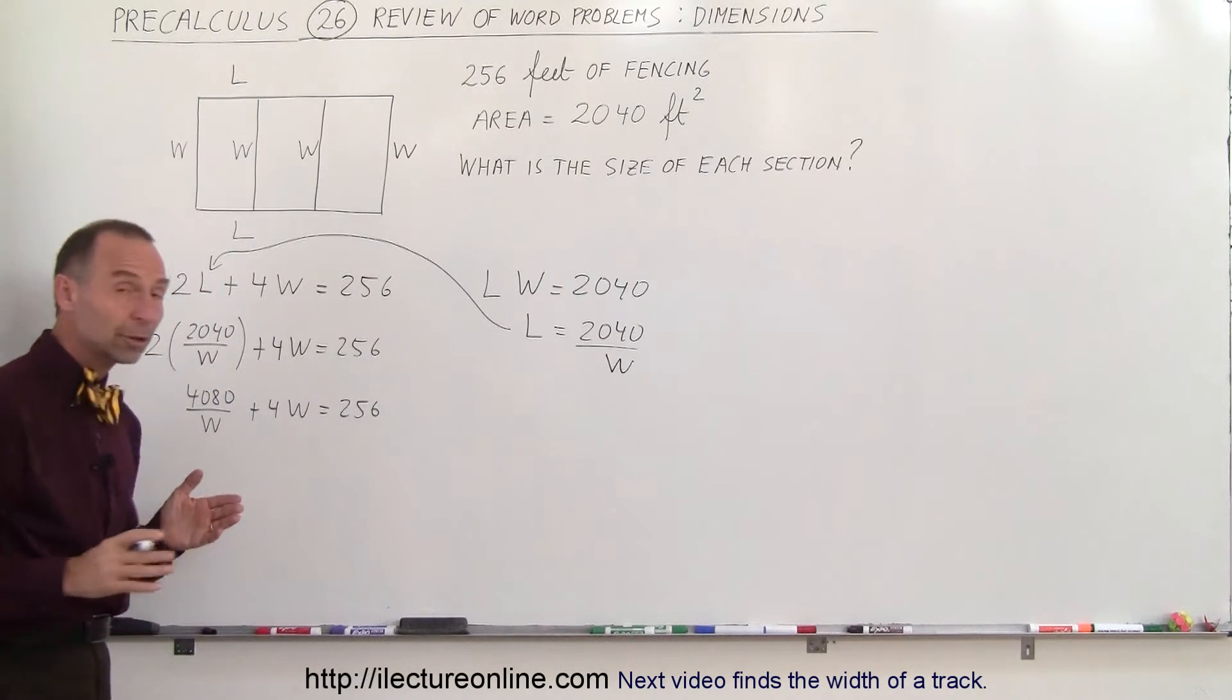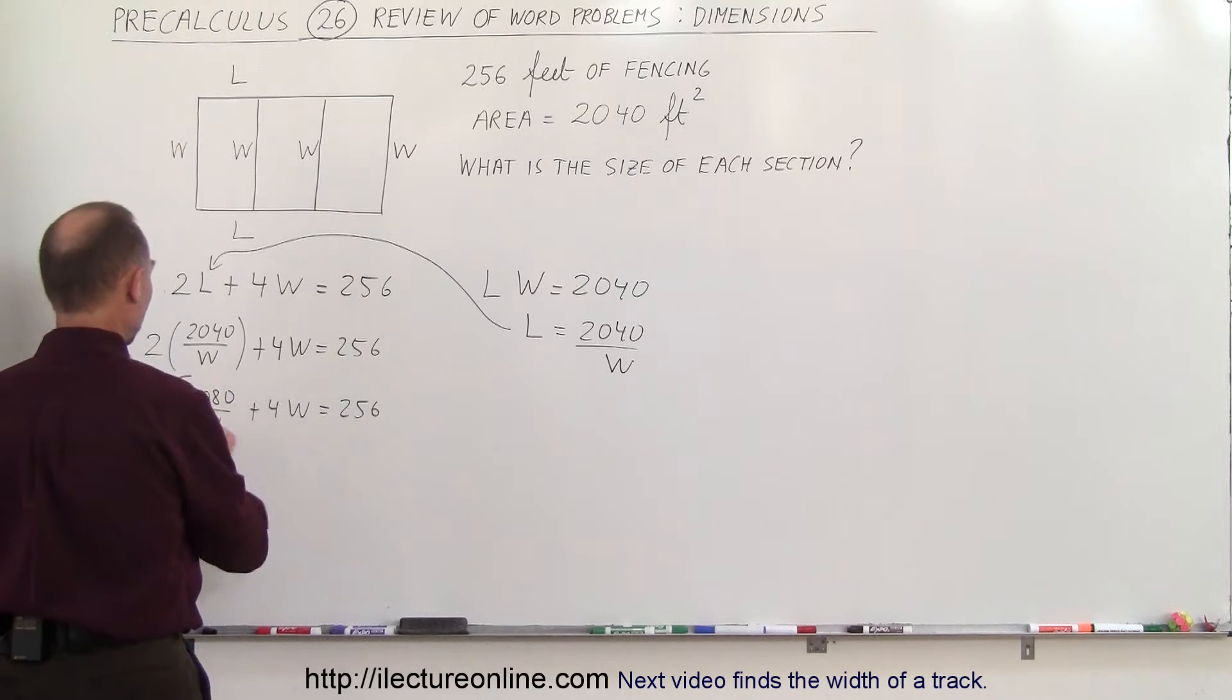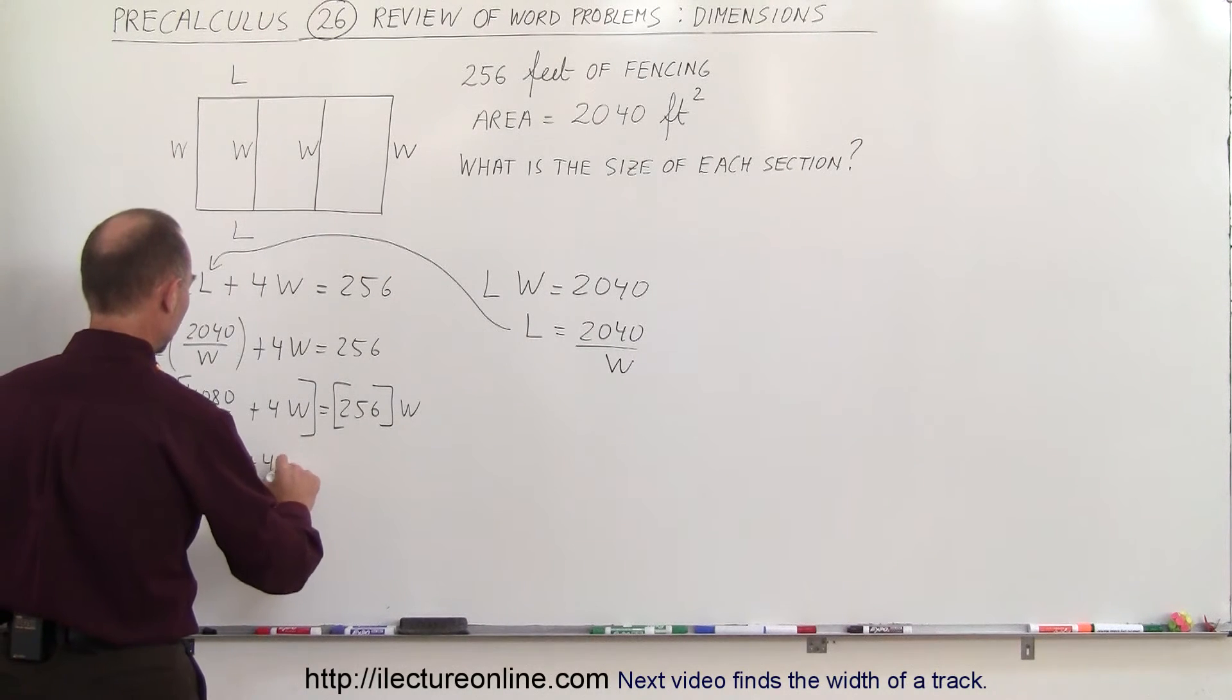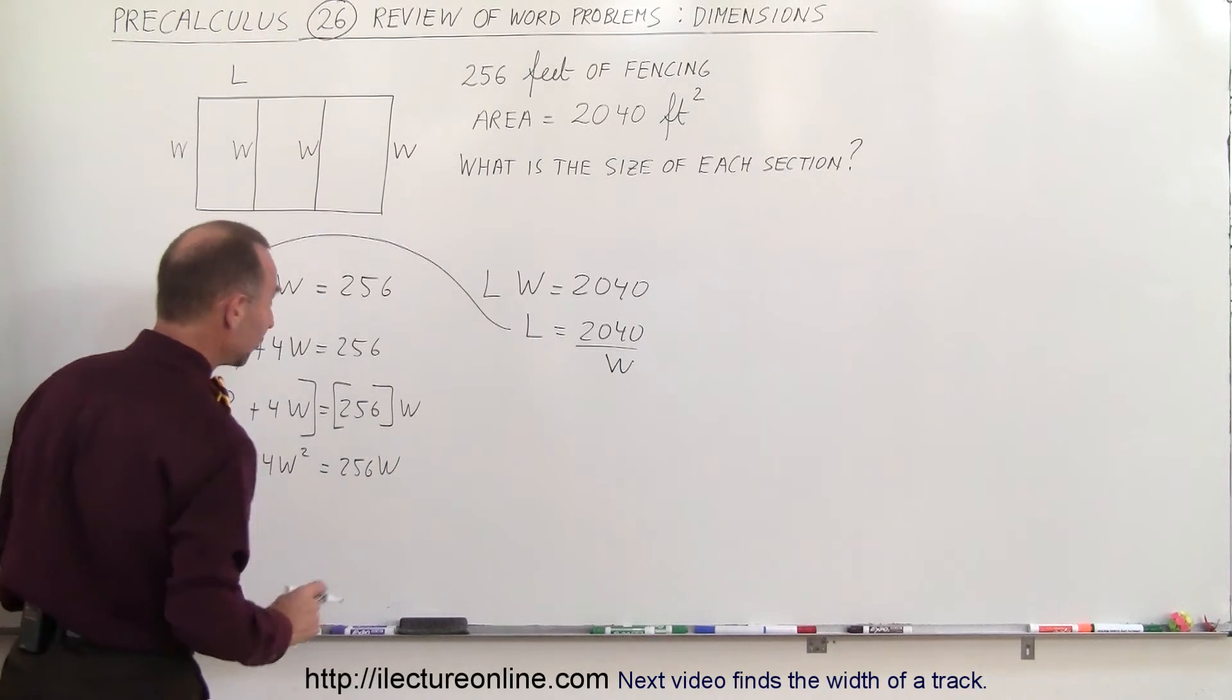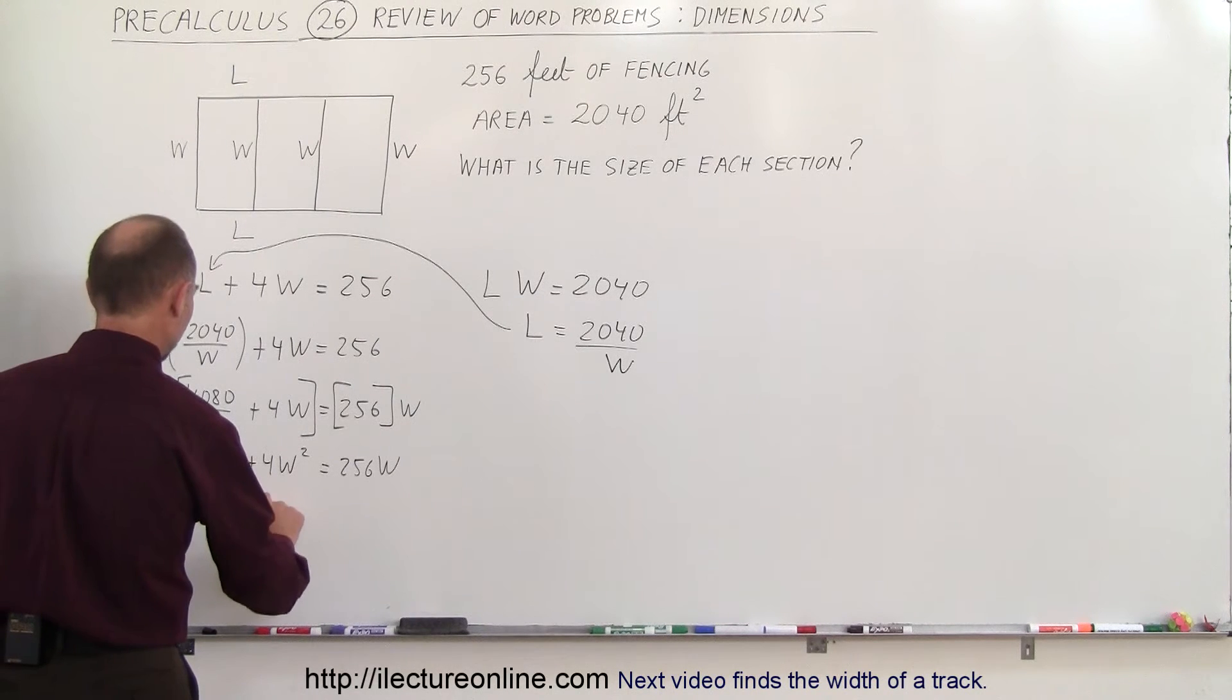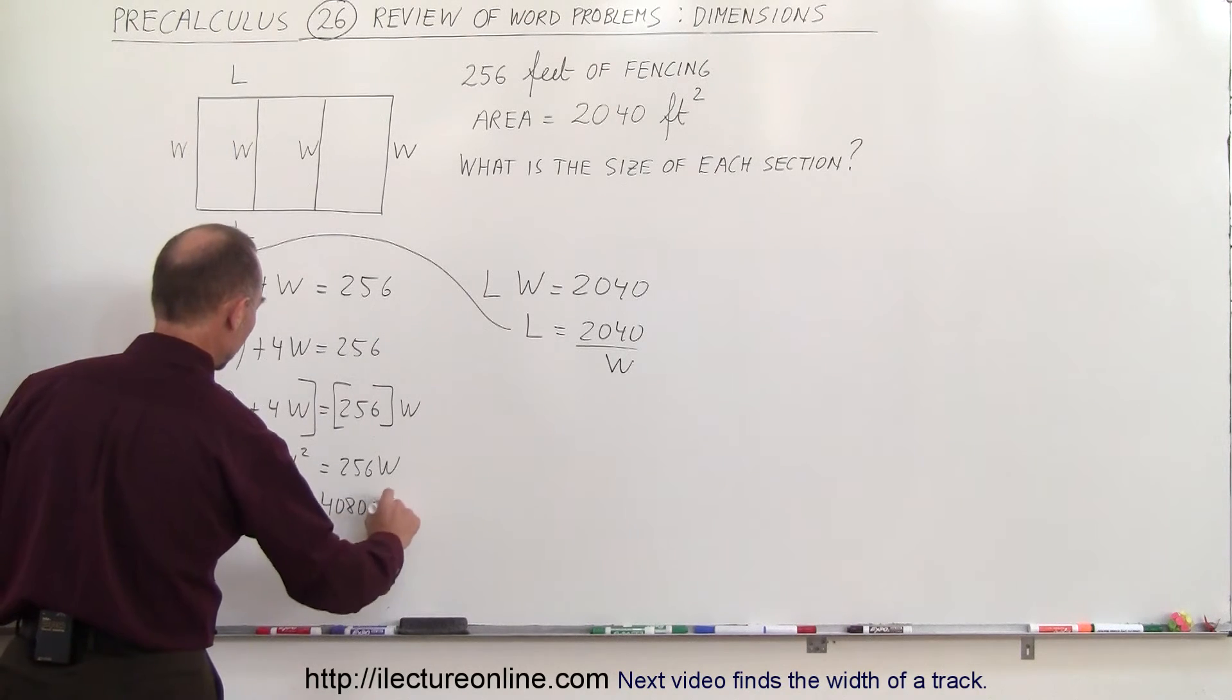The next thing we can do is multiply both sides of the equation by W to get rid of the fraction here. So multiply this times W and multiply this times W. If we do that we get 4,080 plus 4W squared equals 256W and then if we move everything over to one side of the equation we have 4W squared minus 256W plus 4,080 equals 0.